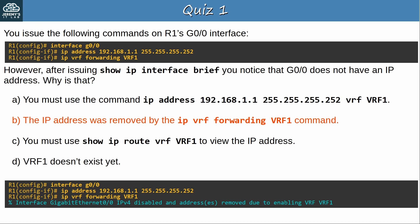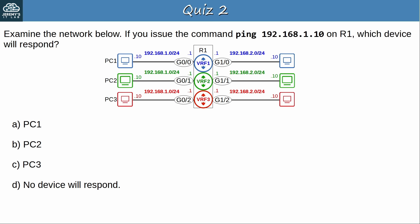Question 2: Examine the network below. If you issue the command 'ping 192.168.1.10' on R1, which device will respond? The answer is D — no device will respond. Actually, R1 won't be able to even send the pings. All of R1's interfaces are assigned to VRFs, and a ping without specifying a VRF will use the global routing table. None of R1's interfaces are using the global routing instance, so the routing table will be empty and it won't be able to send the pings.